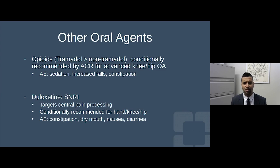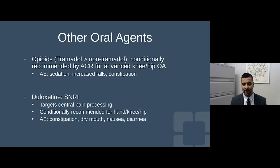I also want to touch on duloxetine. By mechanism of action, it's an SNRI — serotonin norepinephrine reuptake inhibitor — traditionally an antidepressant. Over the years, we've learned it targets nerve pain, and it has a recommendation not only for neuropathic pain from conditions like diabetes, but also a conditional recommendation from the American College of Rheumatology for osteoarthritis.